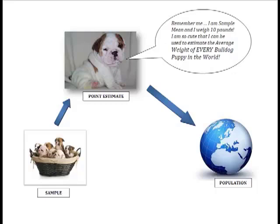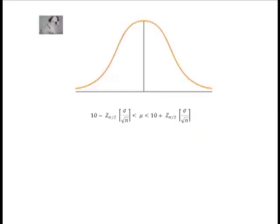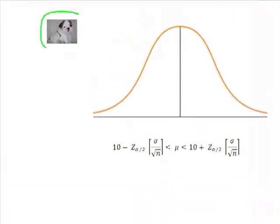I'm going to show you right now. Remember, the central limit theorem told us that if we either had a normally distributed population or sufficient sample size, we could use our friend the normal curve to make inferences about populations from samples. That's how we're going to create these confidence intervals. We're going to use our little SampleMe puppy and use his weight in this formula as x-bar.